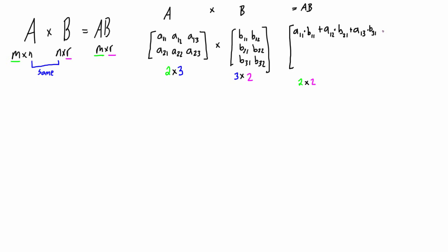To get the element in the first row and second column, we take the first row again and dot it with the second column. So that entry is: A₁₁ times B₁₂, plus A₁₂ times B₂₂, plus A₁₃ times B₃₂. We've taken the dot product of the first row and the second column to get the element in the first row, second column of the resulting matrix.